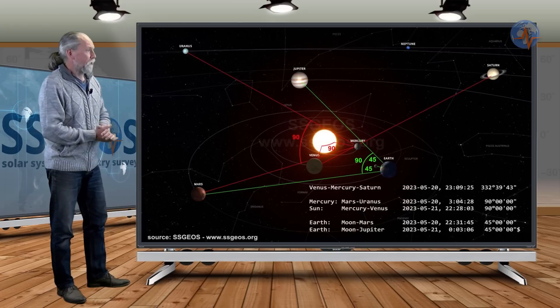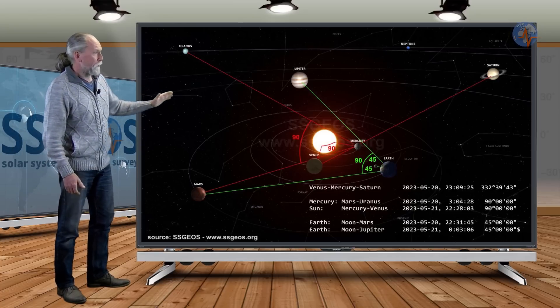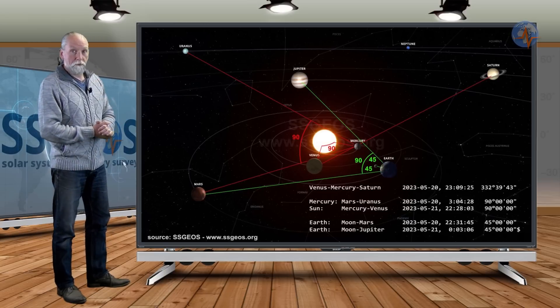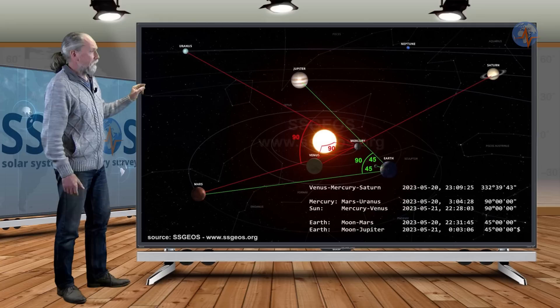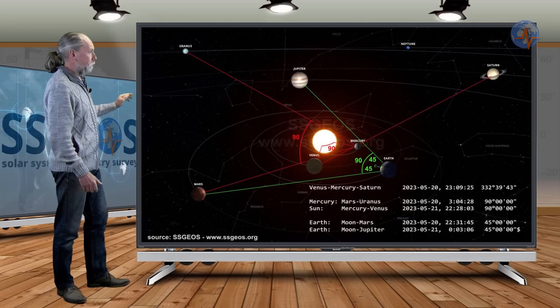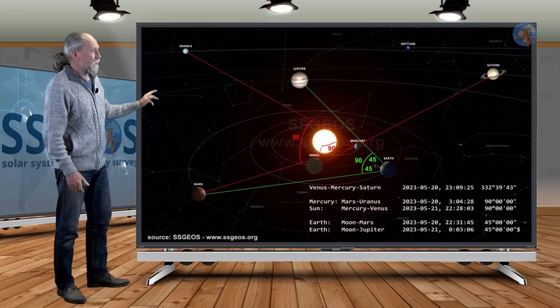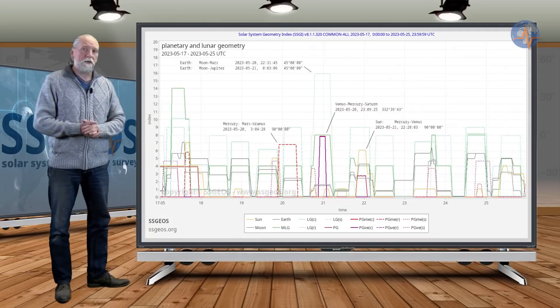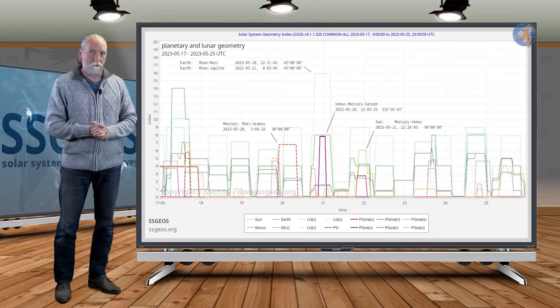...and also Venus, Mercury, and Saturn in a conjunction, and then two 90-degree angles involving Mercury again. As seen from Mercury, a 90-degree angle with Mars and Uranus. And as seen from the Sun—that's heliocentric—a 90-degree angle with Mercury and Venus. So a lot is going to happen in the solar system on the 20th and the 21st.